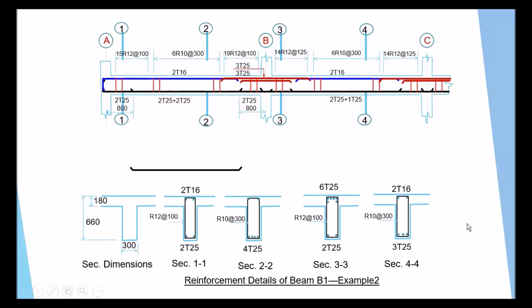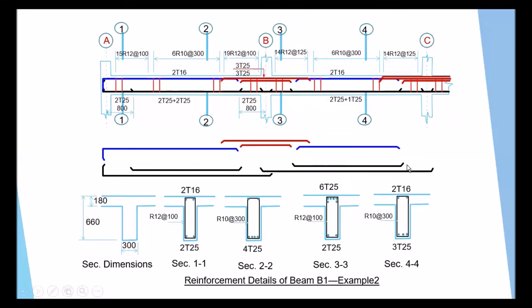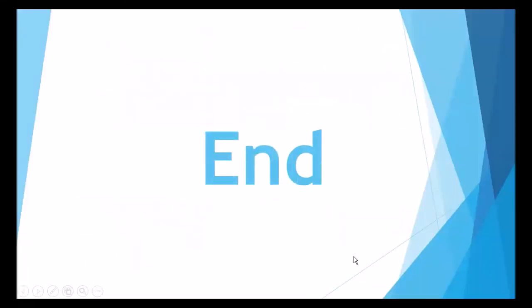This is the end of the presentation. The detailed reinforcement layout is shown separately to help understanding — bottom reinforcement, hangers, top reinforcement, and repetition for all spans and the shear links. This concludes the three-part series on Design of Reinforced Concrete Beams: Part 1 (introduction and checks), Part 2 (simply supported beam example), and Part 3 (continuous beam example). Thank you and see you in a coming video. Goodbye.